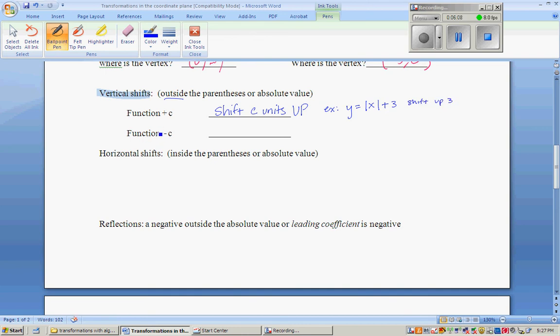If you have a function minus a number, you're going to be shifting C units down. And an example would be Y equals the absolute value, or let's use a different one just so you can be used to seeing other ones. Y equals X squared minus 10. That would mean that whatever an X squared looks like, everybody would shift down 10.